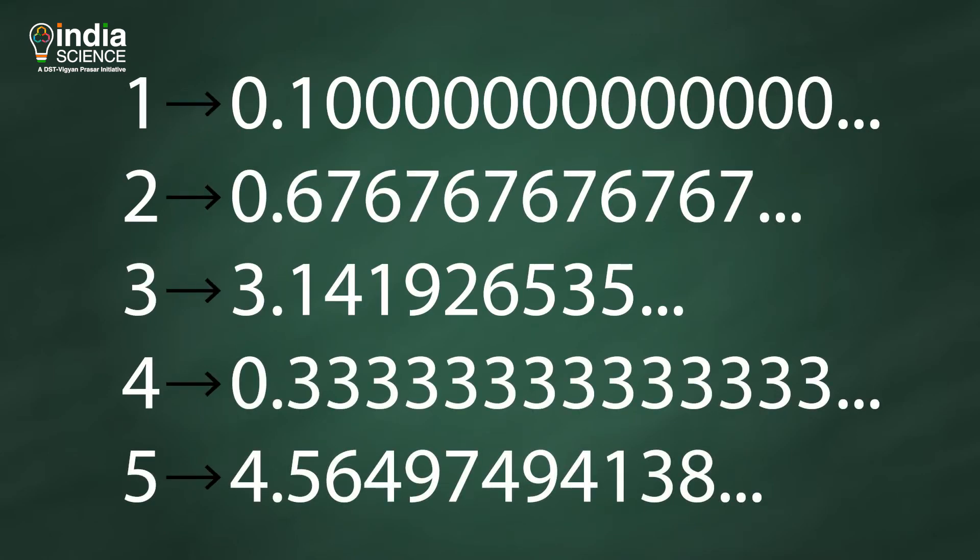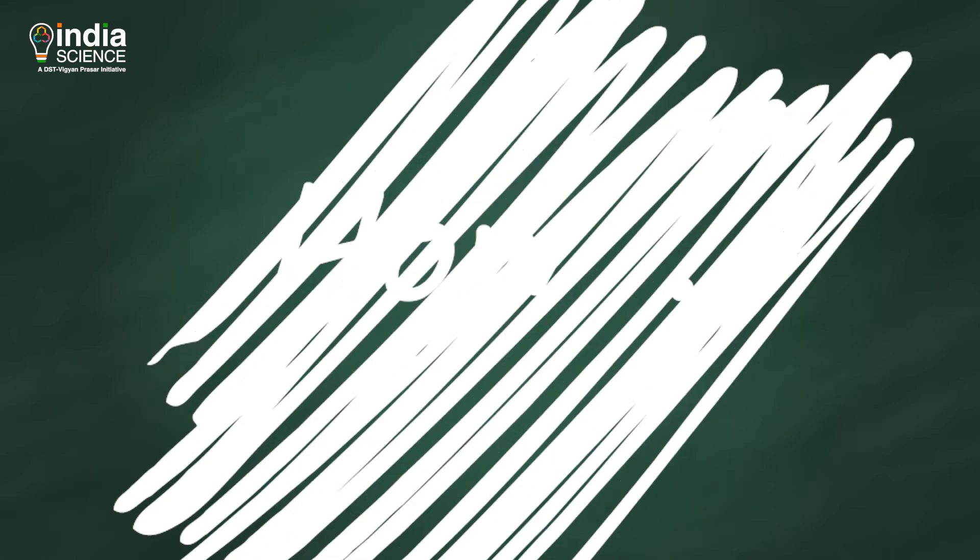You can take any other random number as well, and assign a natural number to that real number. So from our assumption, each and every number should show up on the list. But this is not possible.